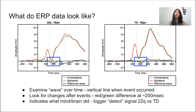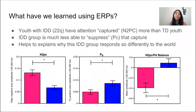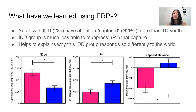We see there's a larger red-green difference in the 22Q teen than the typically developing teen. This indicates what the brain did — we detected a bigger signal for the specific event for the 22Q youth. We can further our analysis of ERPs by measuring the size of the signal and running statistical tests to find significance between groups. We found that youth with 22Q have a much stronger N2PC than typically developing youth, meaning their attention was captured more strongly by distractors in the task. The PD component indexes the suppression of distractors, and youth with 22Q were much less able to suppress the attentional capture. These differences can explain why youth with 22Q respond so differently in the world and could also explain the basis of some of the learning and mental health challenges that 22Q youth face.